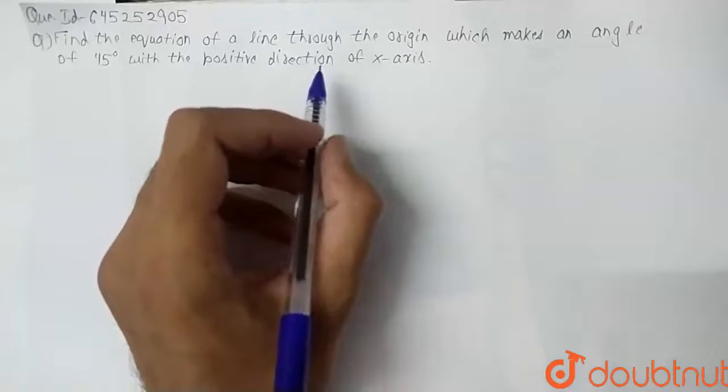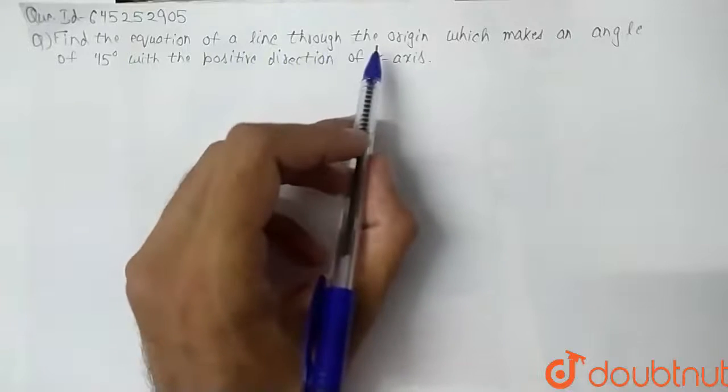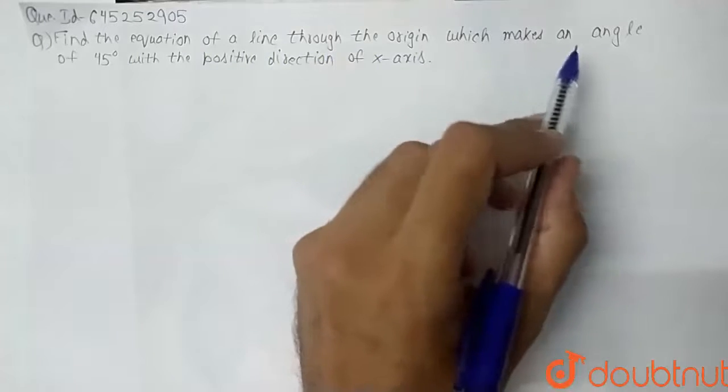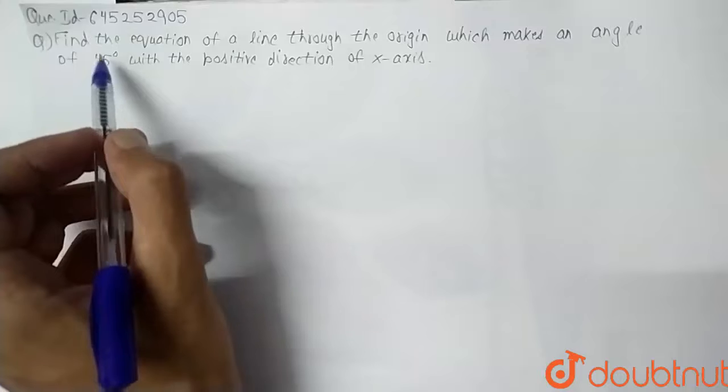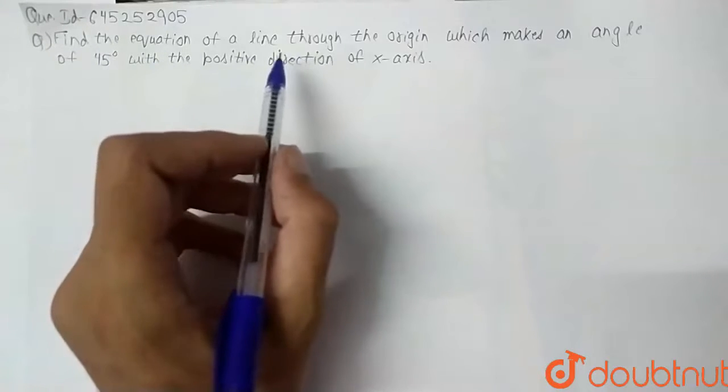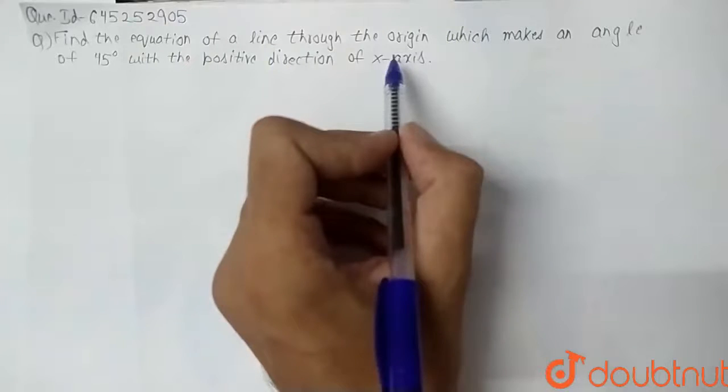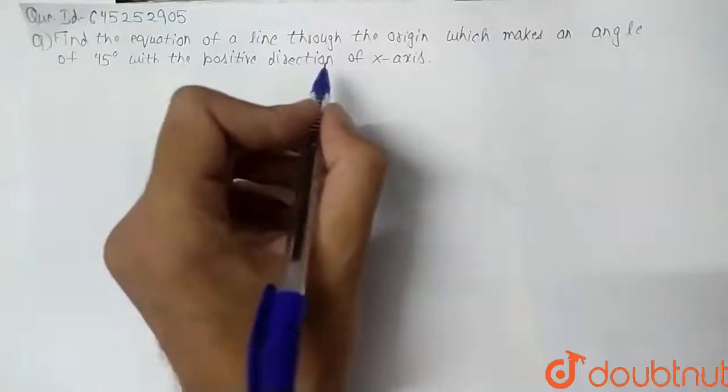Basically in this question we have to find the equation of a line which is passing through the origin, which makes an angle theta equal to 45 degrees with positive direction of x-axis.